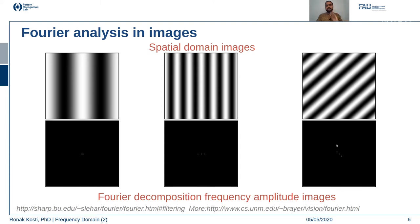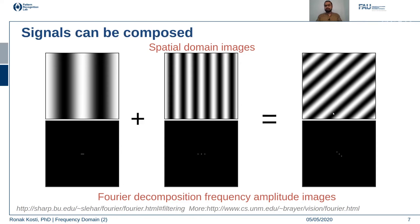We can reconstruct our original signal from this frequency decomposition and vice versa. We can also combine different signals because Fourier transforms have the additive property, meaning frequencies can be combined like images and we can convert one from the other.